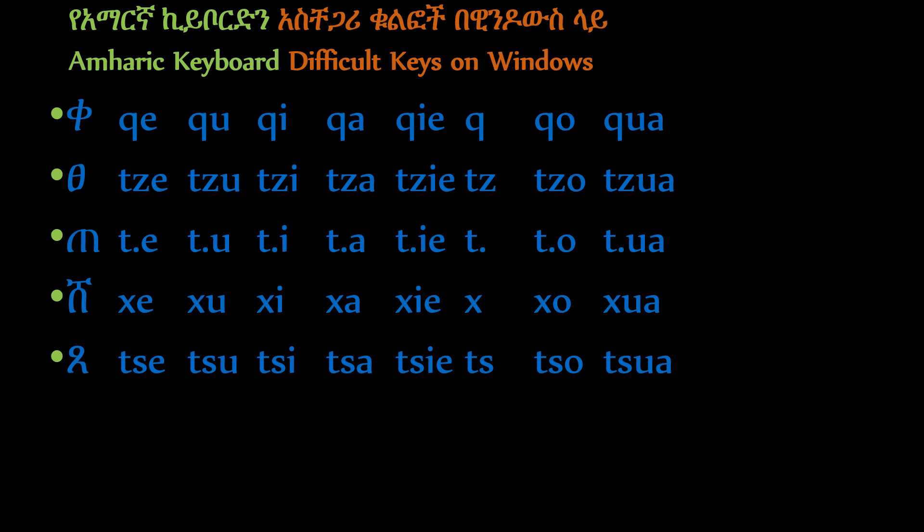4. This is S and this is TZ. This is PE — PE, PU, PI, PA, PE, PE, PO, PO.